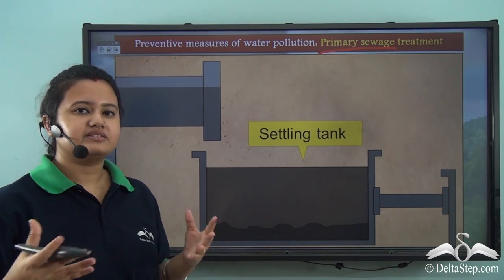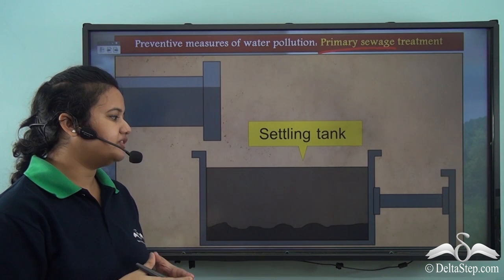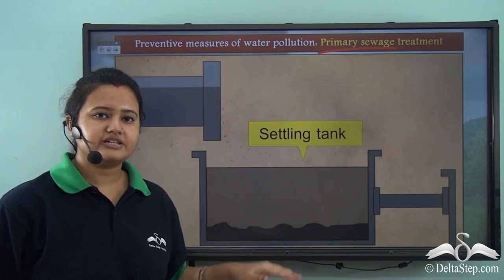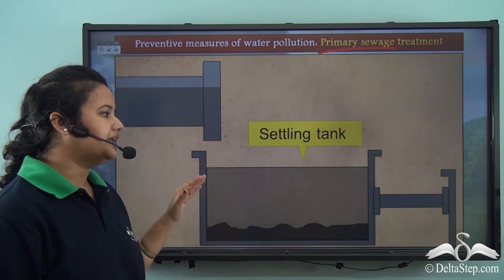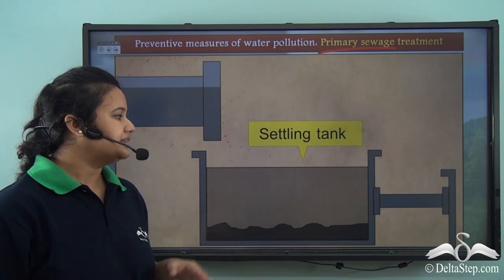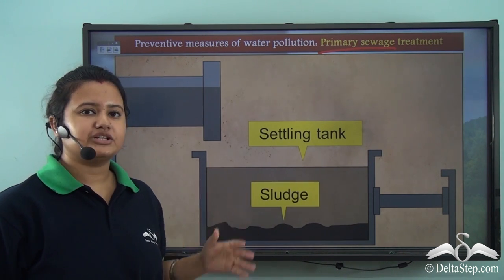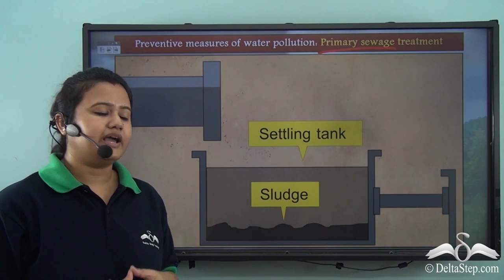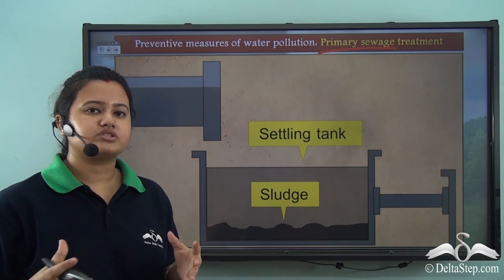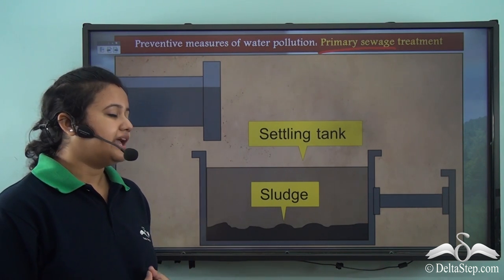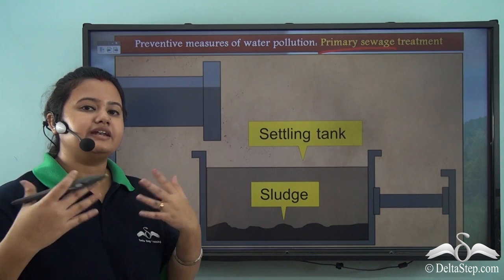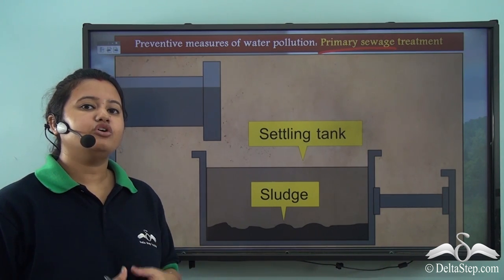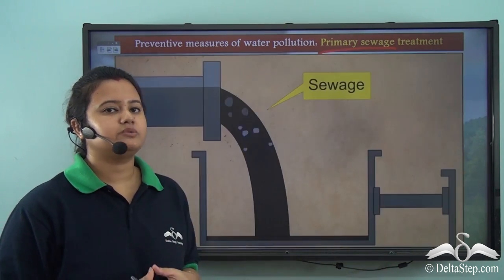In primary treatment, the sewage is held in a settling tank. The heavier materials settle at the bottom of the tank while the lighter liquid floats above. The heavier material that sinks is known as sludge, while the lighter liquid is moved on to the next stage — the secondary stage of sewage treatment.